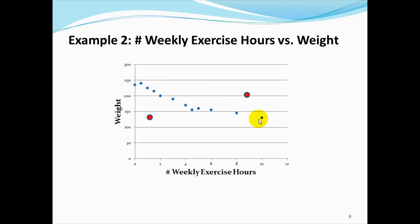With this example, we also have to acknowledge that outliers exist. Most of us know someone whose only exercise for the week is lifting their spoon to their mouth, yet they always seem to keep their weight at a very low number. On the other end of the spectrum, we may know people that say they are in the gym a lot, yet their numbers remain high compared to their peers. Still, for this example, we say that these variables appear to have a linear relationship since these paired data values appear to be grouped around an imaginary line.